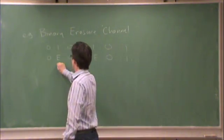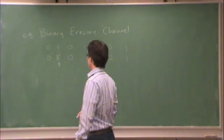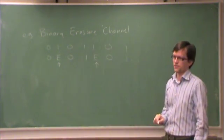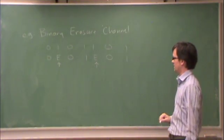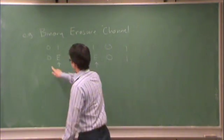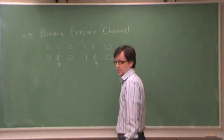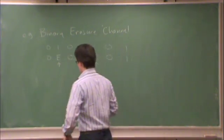In other words, these E's are blanks that you have to fill in. So the job of the decoder is just to fill in the blanks, and any time you see a 0 or a 1, you know that that was correctly transmitted.